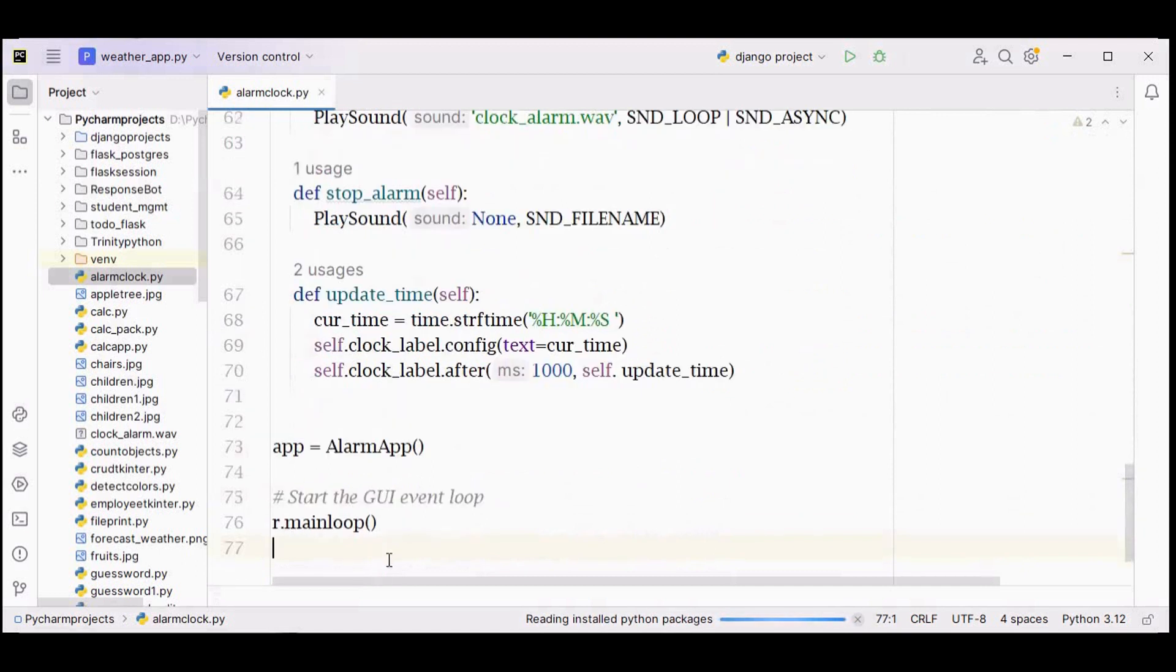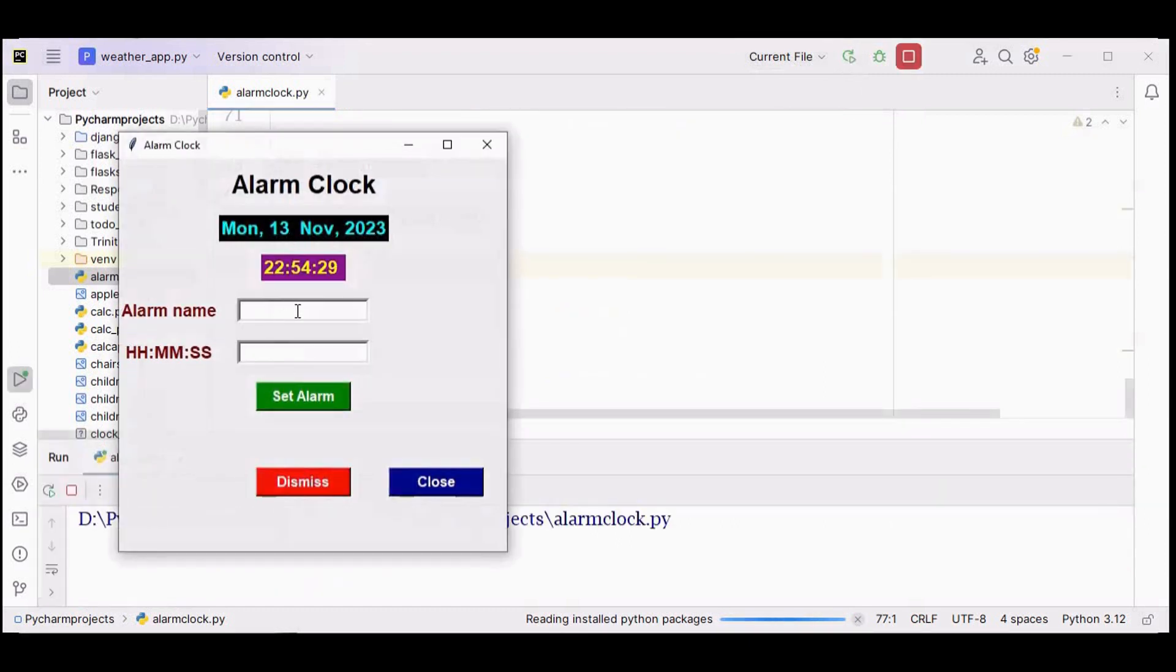That's it with the methods of class AlarmApp. Then I am creating an instance for AlarmApp class, and finally we are calling the mainloop function so that the application window runs. Execute it now. You can give any alarm name - let me just give hello, any name can be given.